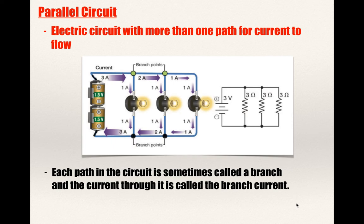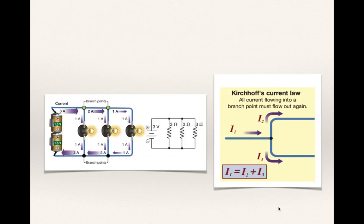When you look at this particular diagram, imagine the electric current as it flows around has the opportunity to go through each one of those light bulbs. It doesn't necessarily mean it has to go through every single one like the series circuit did.